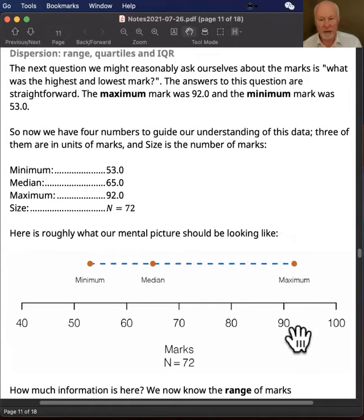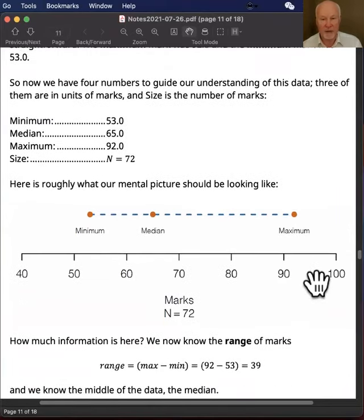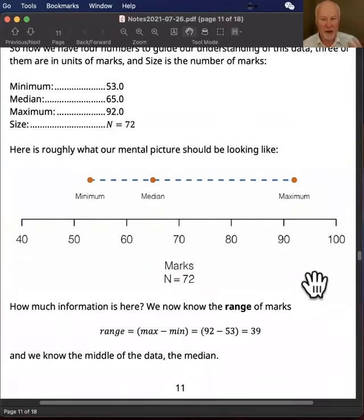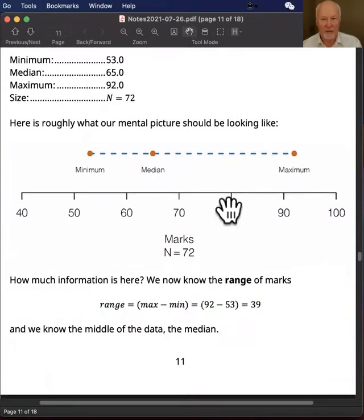Now given this information, this enables us to really start forming a spatial understanding of the data, and this is roughly what it might look like. So we only have three points that we know about: we know the minimum there, we know the median, and we know the maximum.